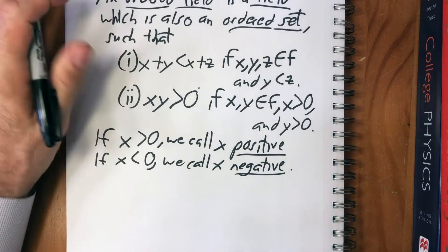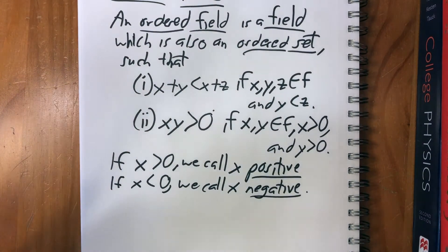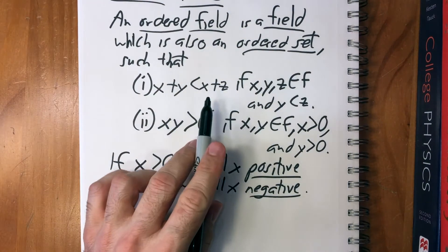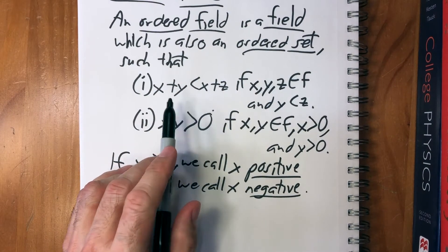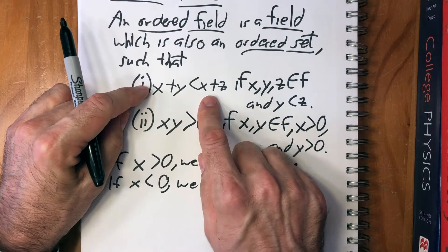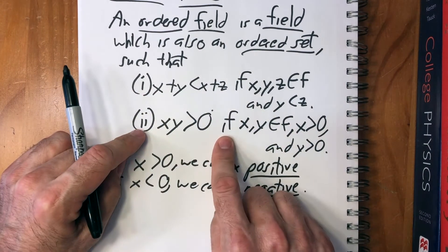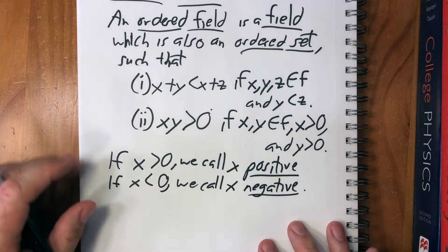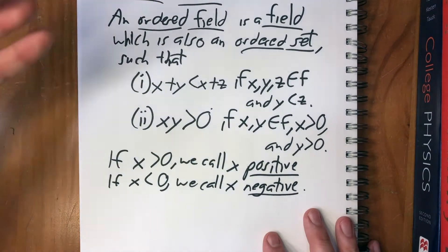And so what we're doing here, that's just an order on a set. What this is doing is combining the order concept with our field axioms, because it says what happens with addition in some way, and it connects it to multiplication in some way. So these together will make an ordered field.